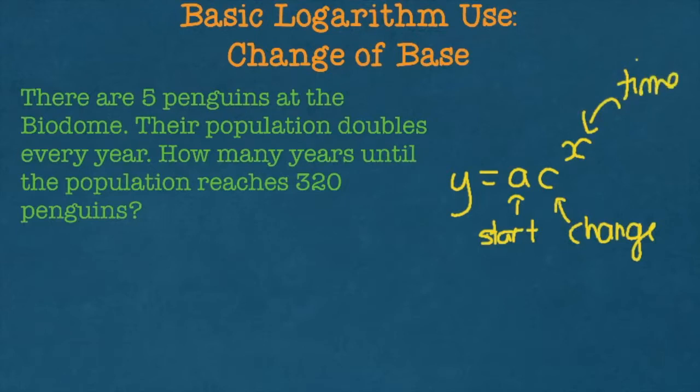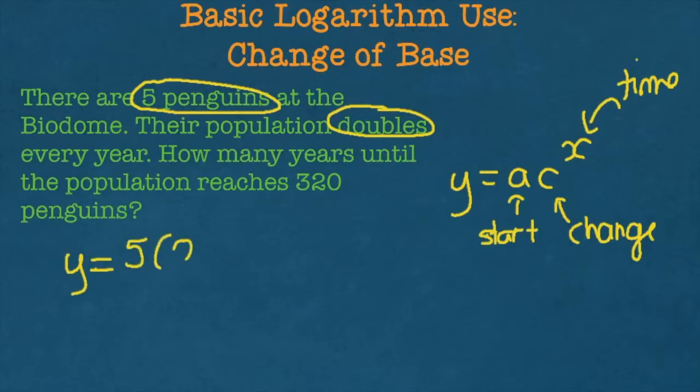So here, what are we given? Well, we are given how many we had at the start, and we are given the change. So all we're going to do is we're going to change the letters into numbers. And we're going to be left with y is equal to, well, a, my start is 5, my change is doubles, so 2, and then to the x. So that is my exponential function rule.